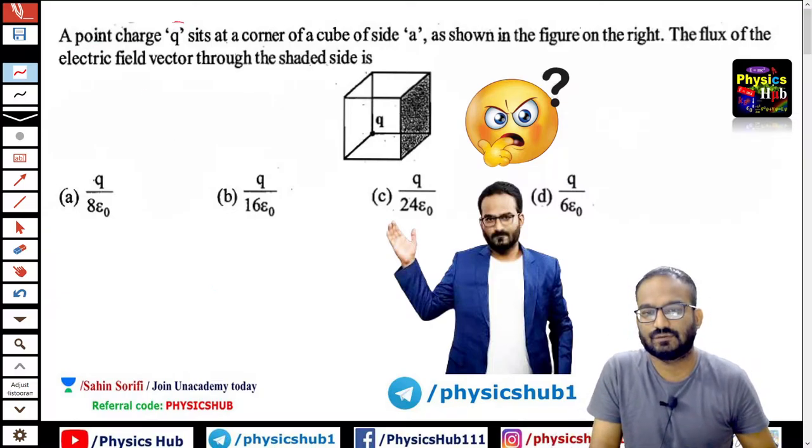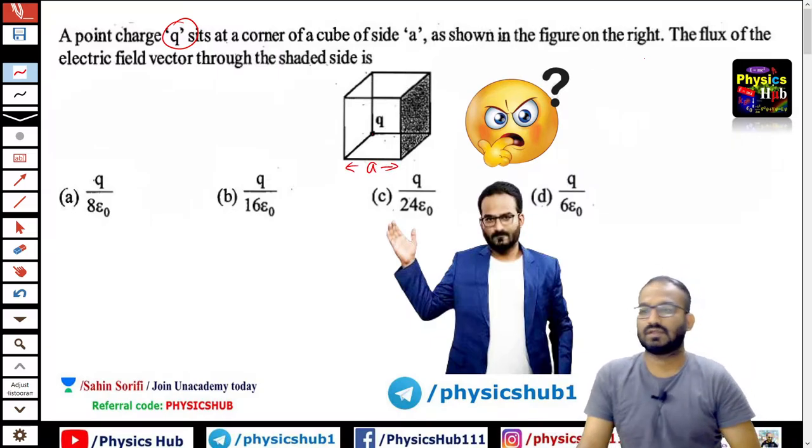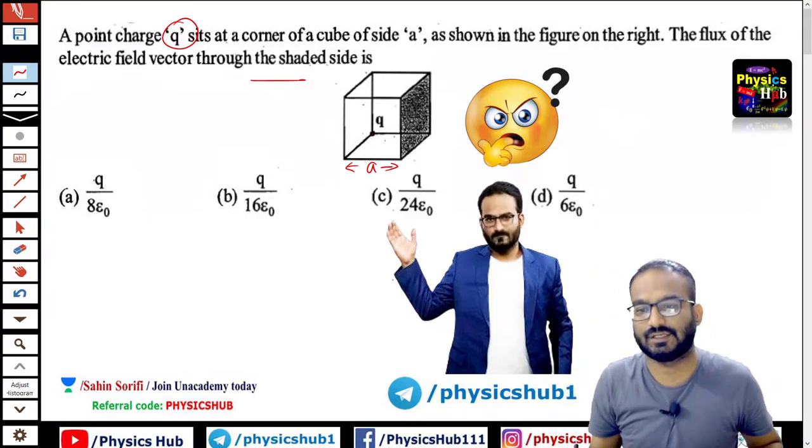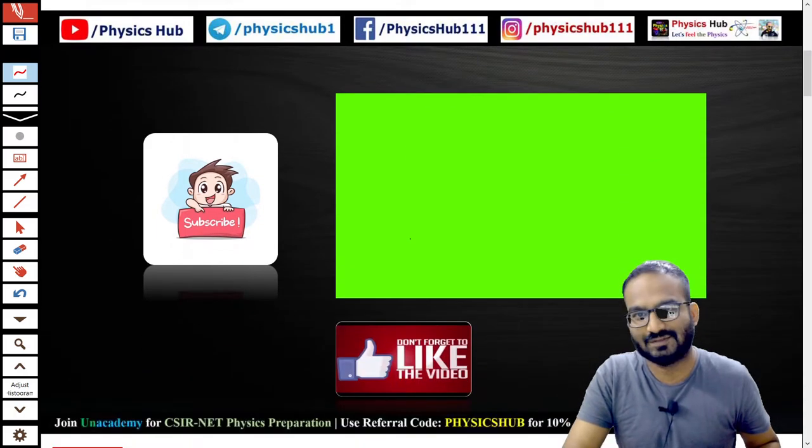A point charge Q sits at the corner of a cube of side A. Assuming the figure on the right, the flux of the electric field vector through the shaded side is. Okay. So before you start the problem, if you need to, please subscribe to the channel.